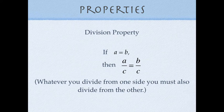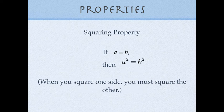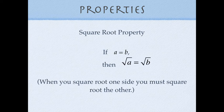Two more properties you are probably familiar with: if a equals b, then squaring one side should be the same as squaring the other — whatever you do to one side of the equation you must also do to the other. And finally, the square root property: when you take the square root of one side, you must take the square root of the other.